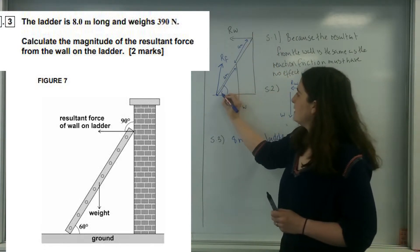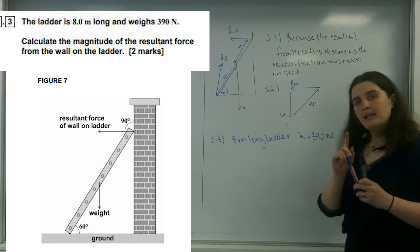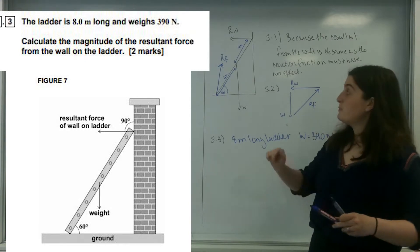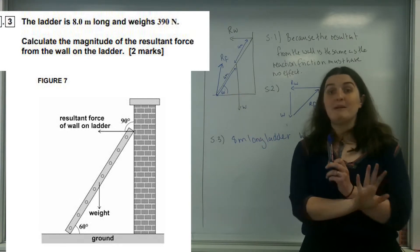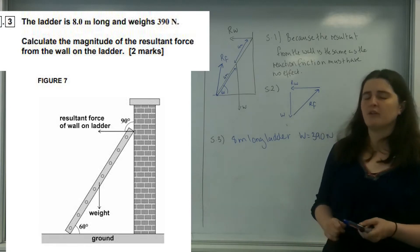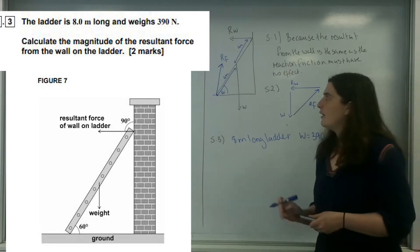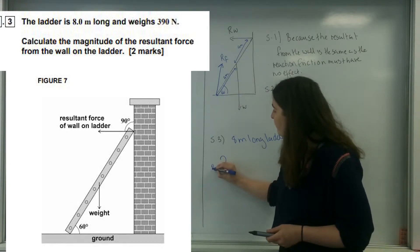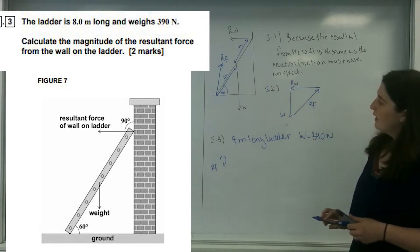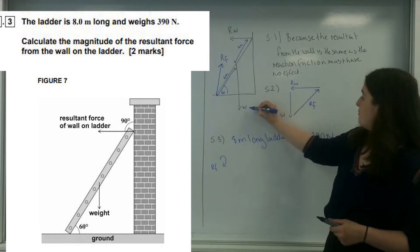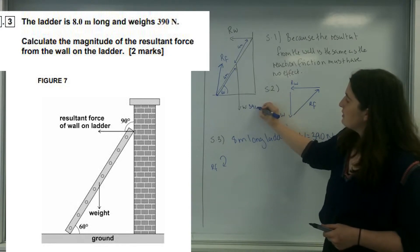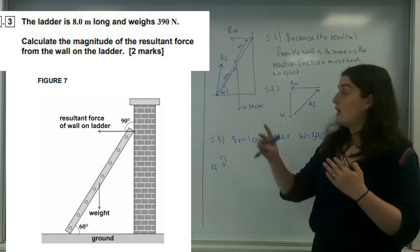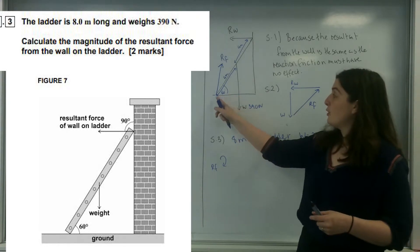The angle here is 60 degrees. I am going to take moments around this point here, and the reason I'm doing that is because any forces at that point mean absolutely nothing to my formula — which is fantastic because it removes an unknown. So I'm going to take moments around RF. This is my weight — 390 newtons — and I need the perpendicular distance from the pivot.